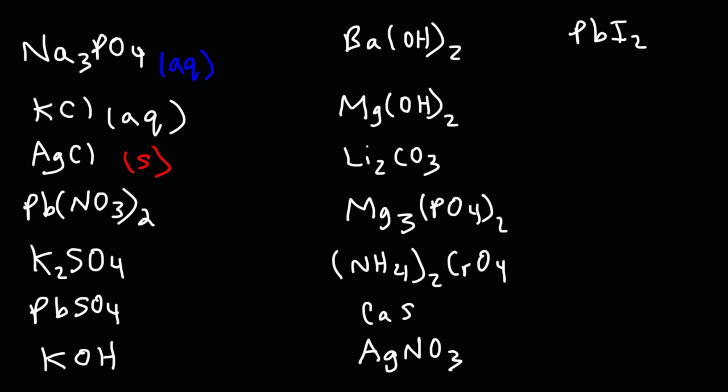Lead(II) nitrate: nitrates are always soluble, so we put that in the aqueous phase. Potassium sulfate: potassium is a Group 1 metal cation, so that dissolves in water — aqueous. Lead(II) sulfate: sulfates are generally soluble, but lead is an exception, so this is insoluble in water. Potassium hydroxide: potassium being a Group 1 metal, that's always going to be soluble — aqueous.